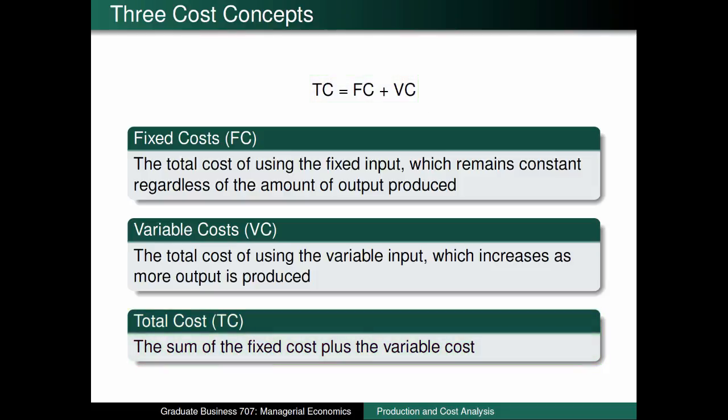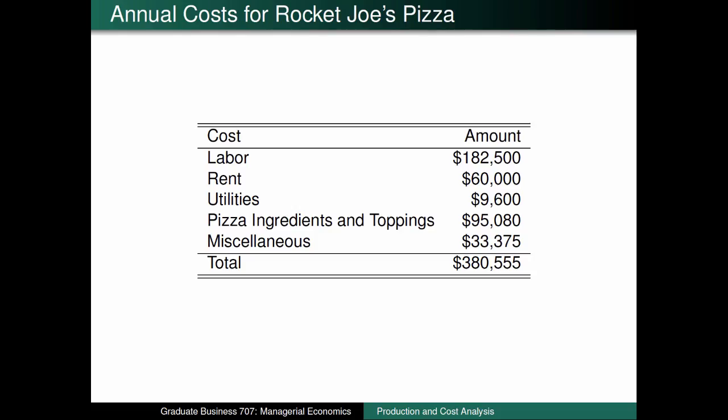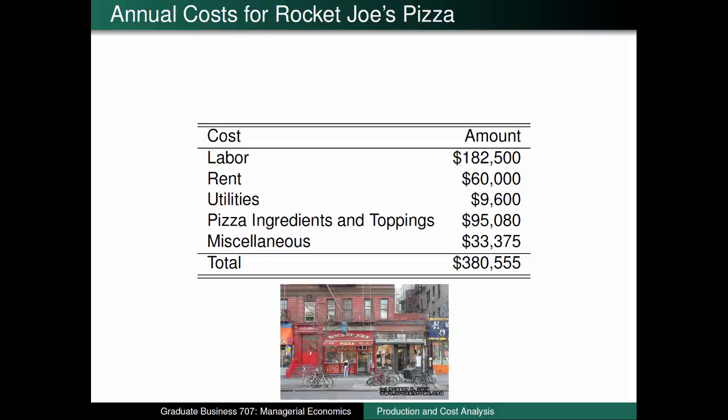I'll talk about long-run cost in the third and last recording. In order to try to put production and cost in a real-world setting, I obtained annualized cost data from Rocket Joe's Pizza, a pizza restaurant located on the Lower East Side of New York City.